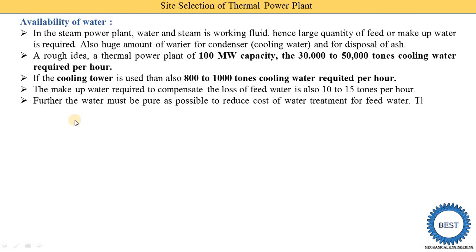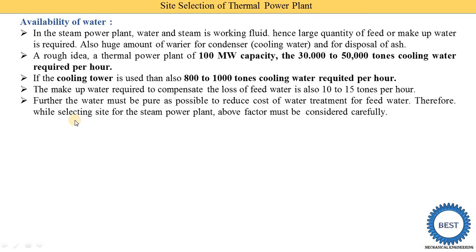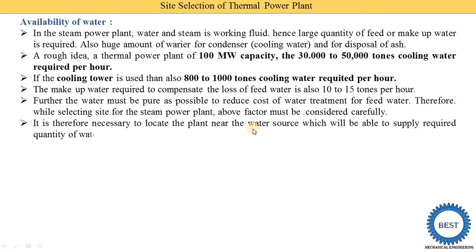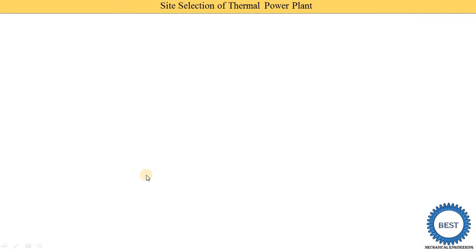The water must be as pure as possible to reduce the cost of water treatment for the feed water. If water at that location is pure, we do not require a water treatment plant. If the water is not pure and has lots of impurities, then we need to install a water treatment plant. Therefore, selecting the site for a steam power plant, this factor must be considered carefully. It is necessary to locate the plant near a water source which can supply the required quantity of water throughout the year. Generally, many power plants are installed near rivers for this reason.